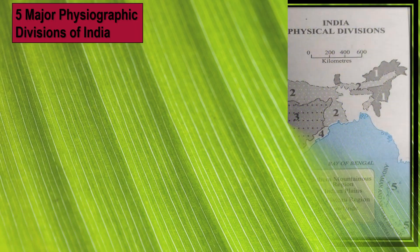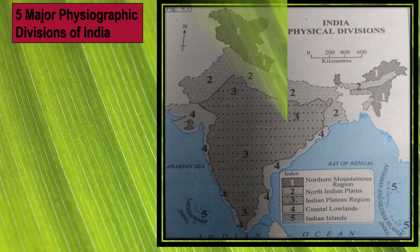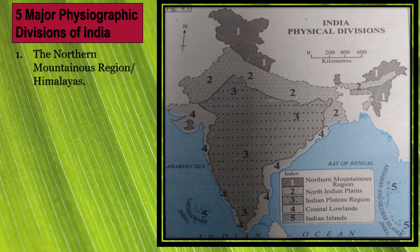India is divided into five major physiographic divisions. The north mountains, also known as the Himalayas, form an arch stretching to about 2500 kilometers from Jammu and Kashmir in the north to Arunachal Pradesh in the east.